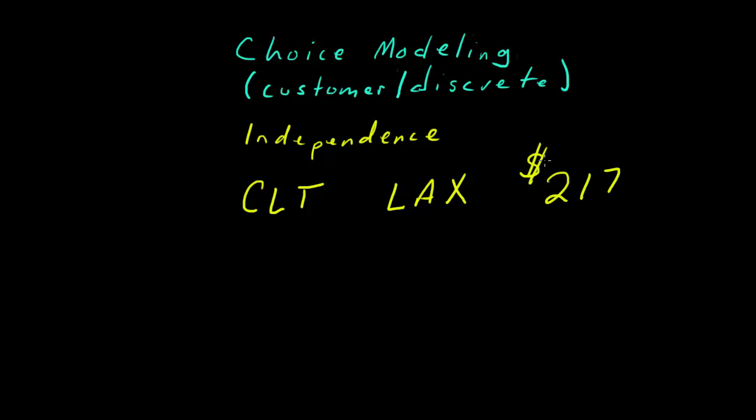Remember, we calculate that expected value. We make a forecast. We estimate a probability distribution. And from that distribution, we get a probability that this customer will pay us $217. We multiply that probability times that fare. That's our expected value. We feed that into our algorithm, and we decide how many seats we're going to allocate to that fare.